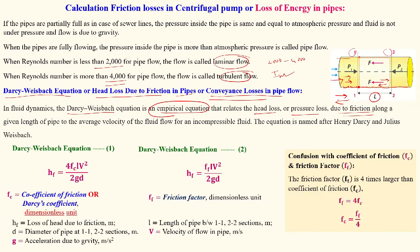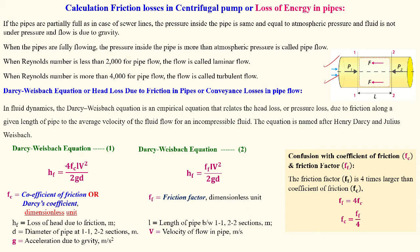The Darcy-Weisbach equation is written as: hf = 4·fc·L·V² / (2·g·d). Here hf is the head loss due to friction; fc is the coefficient of friction, also called the Darcy coefficient — it is dimensionless; L is the length of pipe between sections one and two; V is the velocity in meters per second; g is the acceleration due to gravity in m/s²; and d is the diameter of the pipe.